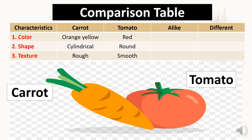Are their colors alike or different? For their shape, a carrot is cylindrical, while the tomato is round. Their shapes are different. How about their texture? A carrot is rough, while the tomato is smooth.